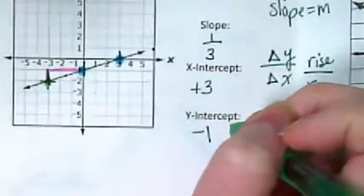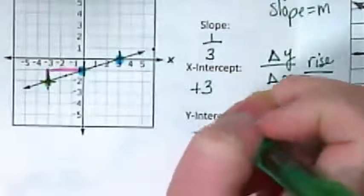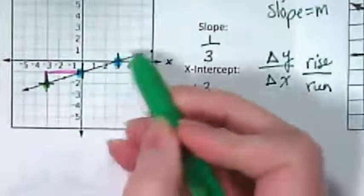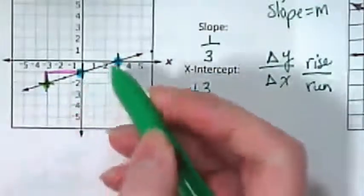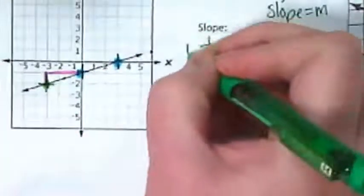And going back to V's question, we should be putting a symbol in front of this. What kind of line is this? It's positive, so this is a positive slope.